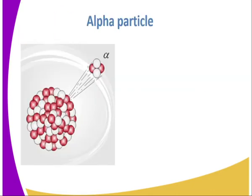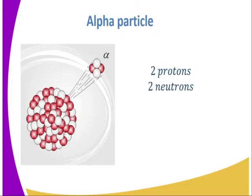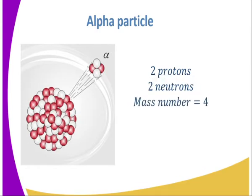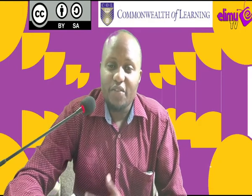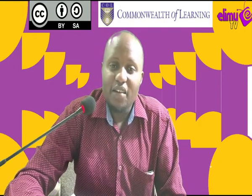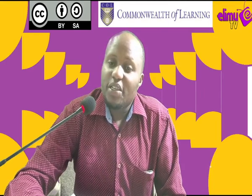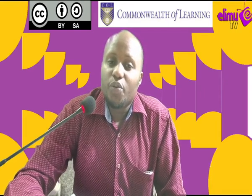What is an alpha particle? After disintegration, or after nuclear decay, two protons may be released in addition to two neutrons, giving us a total mass number of four. Remember that mass number is the sum of protons and neutrons — these are the particles found in the nucleus of an atom. The atomic number of an alpha particle is two.